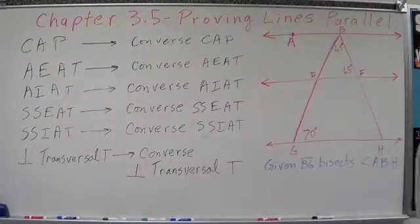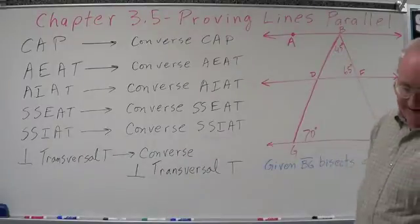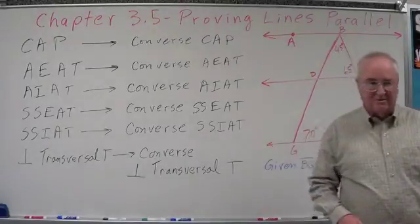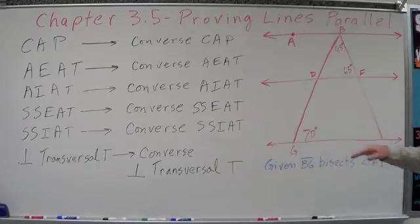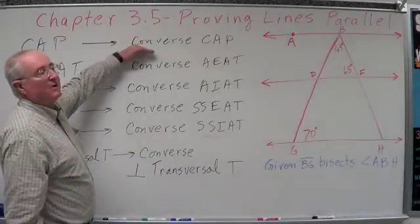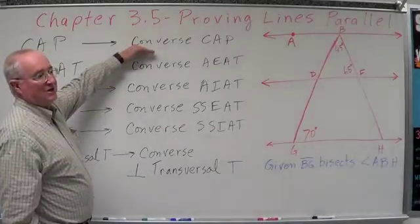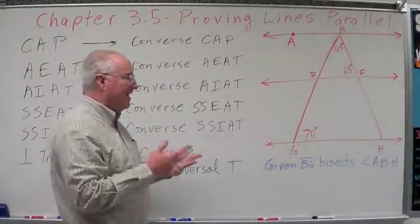Well, there's also a converse CAP, which says if two lines are cut by a transversal in such a way that their corresponding angles are congruent, then those lines are parallel. So the corresponding angle postulate in 3-2 says if we have parallel lines cut by a transversal, their angles are congruent. This converse says if we have lines cut by a transversal such that their corresponding angles are congruent, then the lines are parallel. So it's a converse.